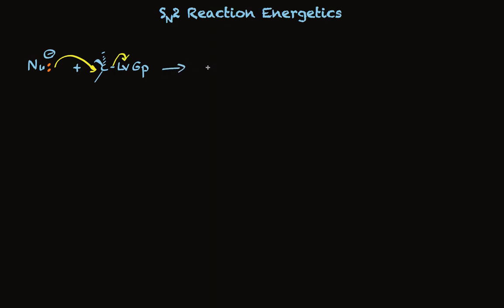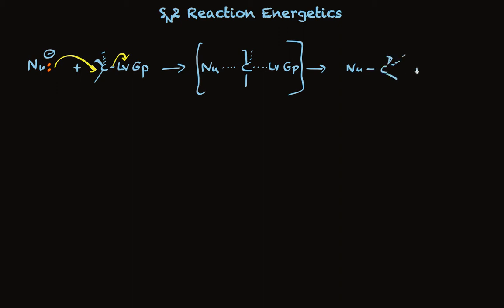So it's going through a transition state where the nucleophile is partially bonded to carbon, the leaving group is only partially bonded to carbon, and whatever is attached to carbon otherwise is in a plane perpendicular to the plane of the screen. And as this transition state, which has essentially no lifetime, proceeds onto product, we end up with a new nucleophile-carbon bond, plus a leaving group.